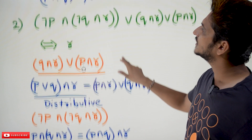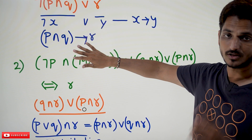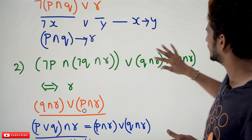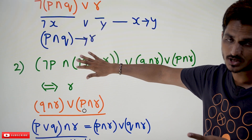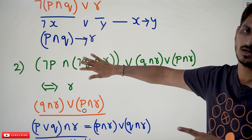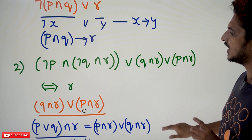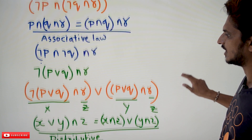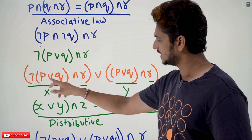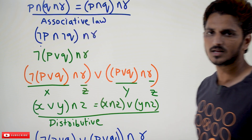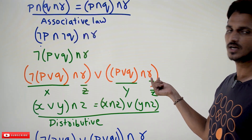After converting the first part and second part, by applying associative law and De Morgan's law on the first part, and distributive law on the second part, our final combined output is: negation of (P conjunction Q), disjunction, (P disjunction Q) conjunction R, disjunction, (P disjunction Q) conjunction R.